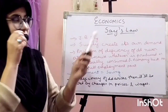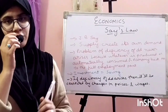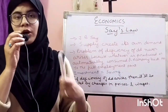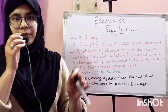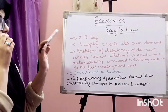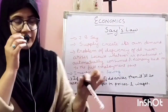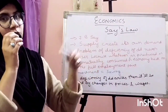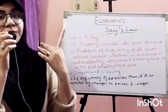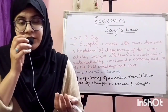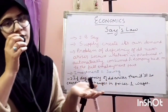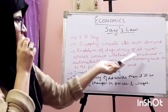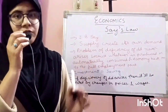Now let's begin with the first theory, which is Say's Law of Markets. This theory was given by a French economist named Say, and the main thrust of this theory is that supply creates its own demand. Whatever the economy produces, demand is also generated by that production, so over-production never arises, because whatever is produced is automatically consumed.